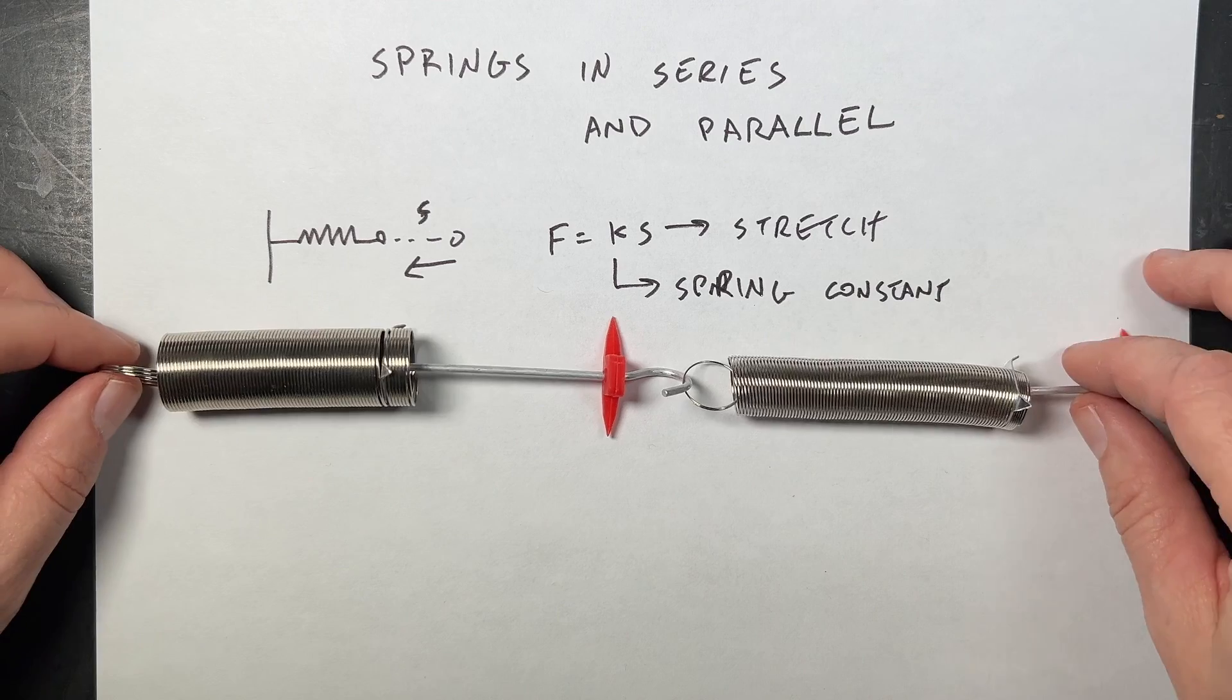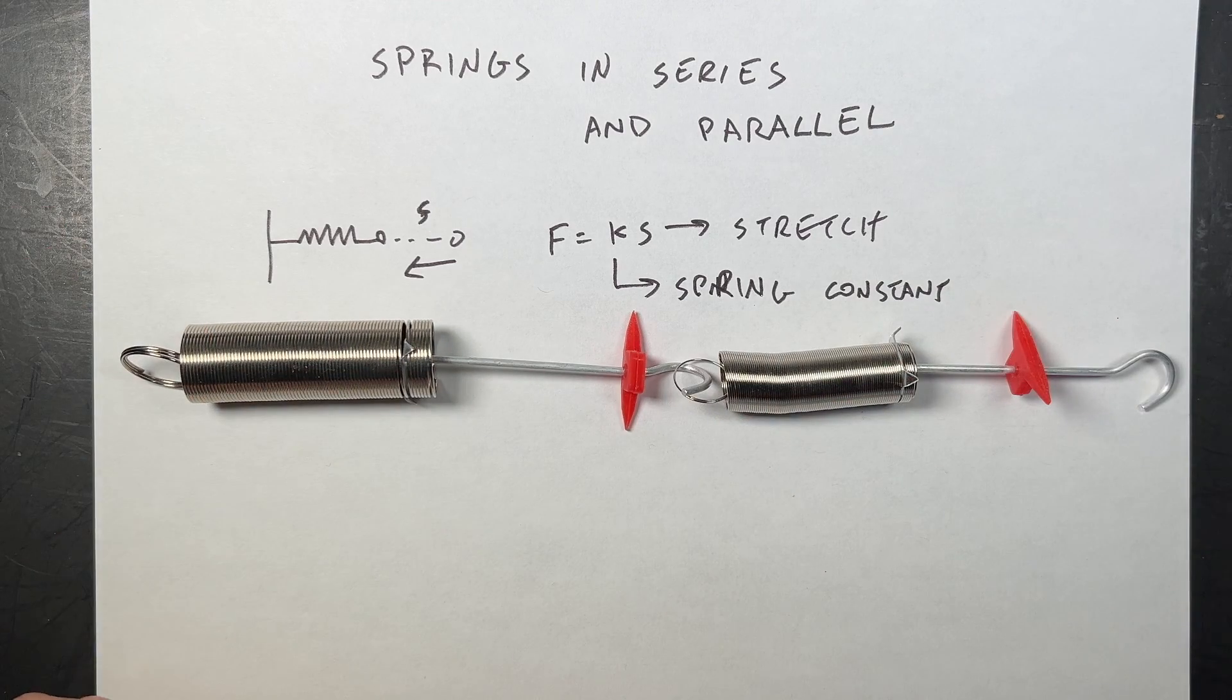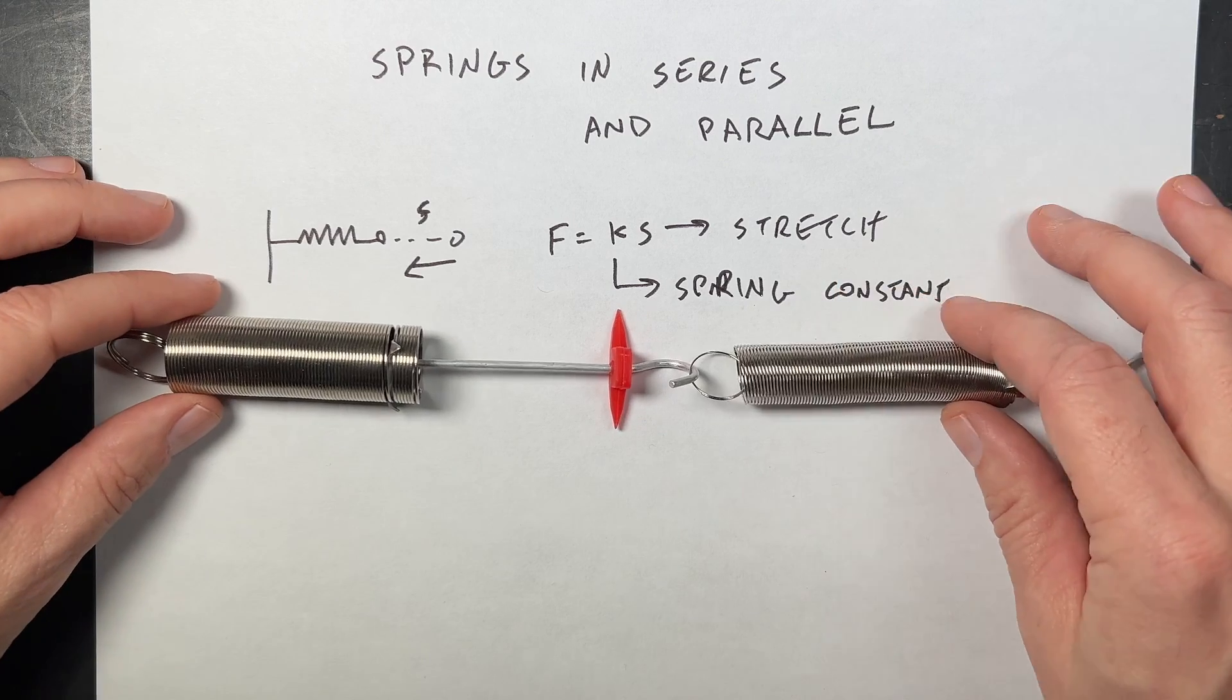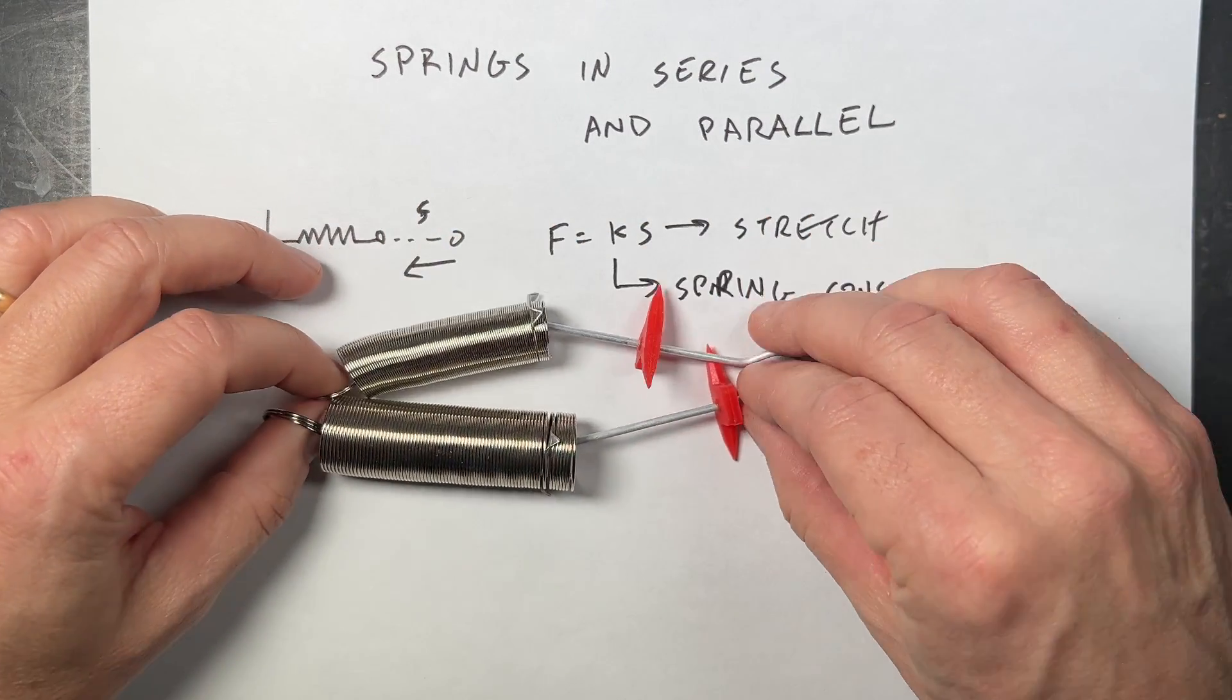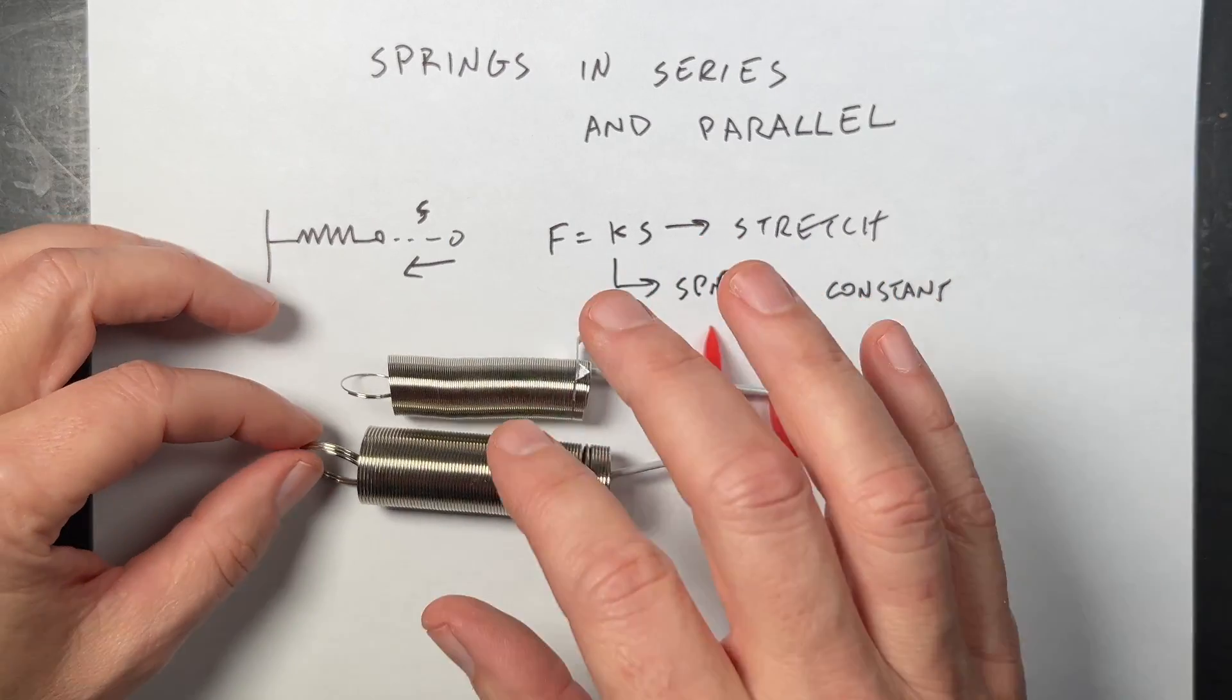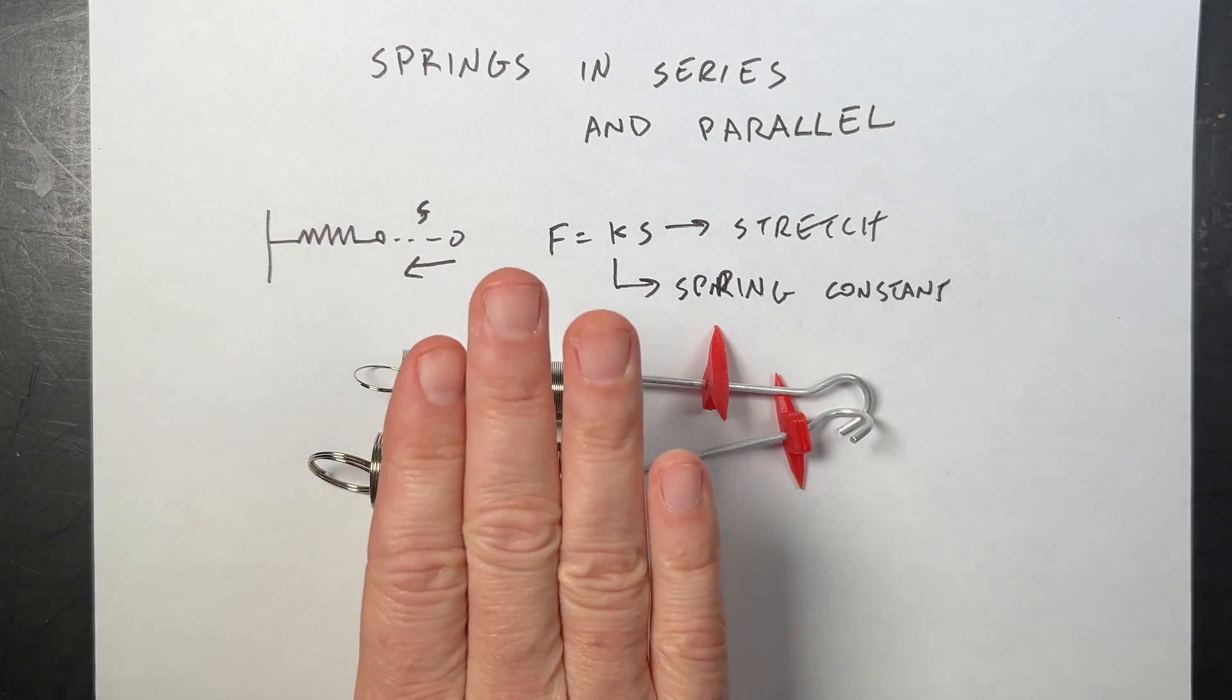And so both of those I want to replace. I want to have two in series like this and replace it with one single spring constant. What's the effective spring constant here? And if I do it in parallel, what's the effective spring constant? So let's do the easy one first, and that's the parallel.